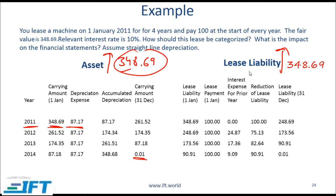The lease liability side is slightly tricky. The initial lease liability on 1st January 2011 is 348.69. The first payment of 100 is made immediately on 1st January. Since the payment is at the start of the year, no interest has accrued on that same day, so the entire 100 reduces the lease liability from 348.69 to 248.69.